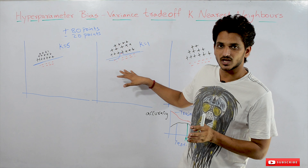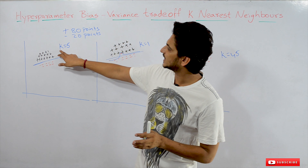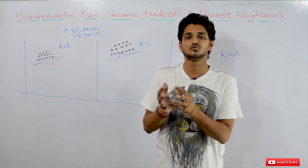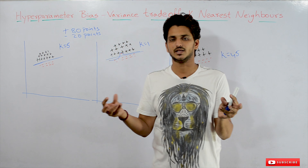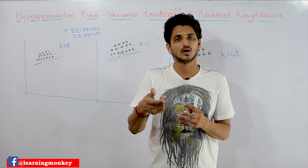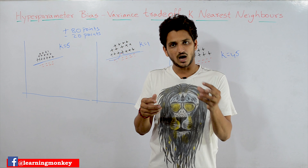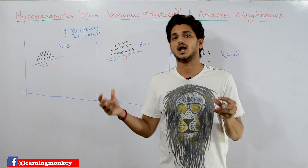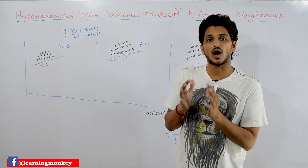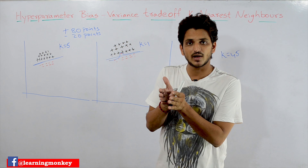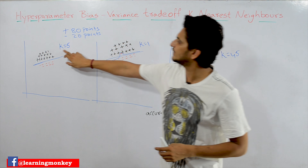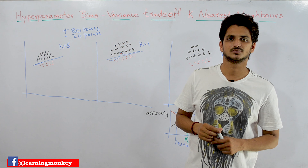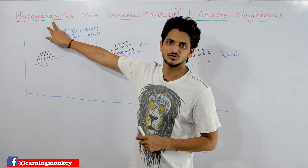In the K-nearest neighbors model, K is taken as the hyperparameter. As the K value changes, our model moves towards overfitting and underfitting — the same thing that happened in Naive Bayes. As the alpha value changes, the Naive Bayes model moves towards overfitting and underfitting. So we have to identify the best alpha value in Naive Bayes, and the same way we have to identify the best K value in K-nearest neighbors. That's what we call hyperparameter tuning.